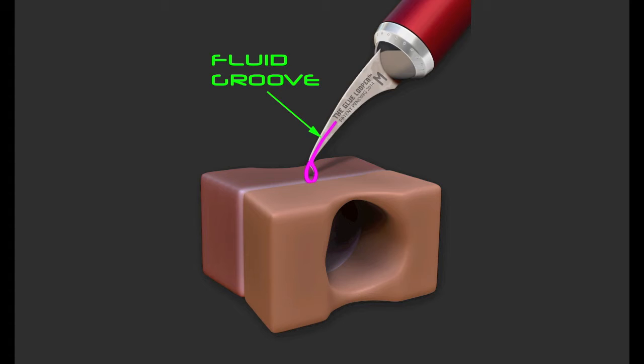So what happens is when you pick up the glue, some of it's going to travel up that channel. And this helps self-regulate the amount of glue that's in the loop.